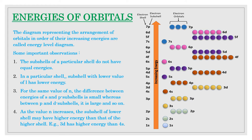The third important observation is that for the same value of n, the difference between energies of s and p subshells is small, whereas between p and d subshells it is large. The fourth observation is that as the value of n increases, the subshells of a lower shell may have higher energy than those of a higher shell. For example, 3d has higher energy than 4s, even though 4s has a larger principal quantum number.